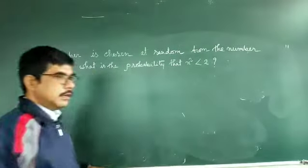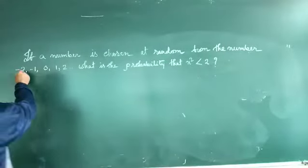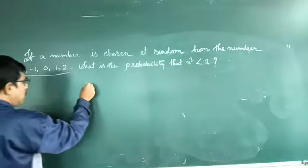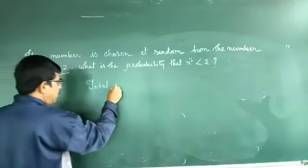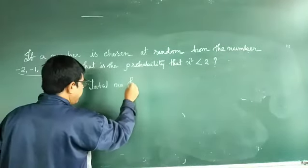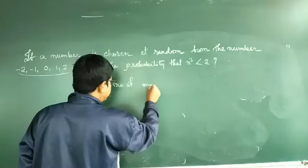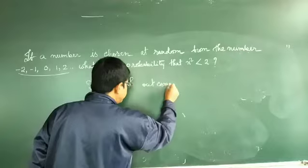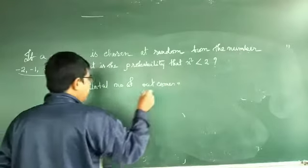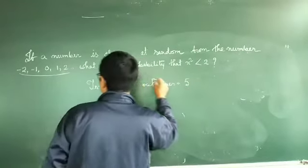So you see that the numbers are 5 here. How many numbers are chosen? Total outcomes - the total number of outcomes is 5. You got 5.